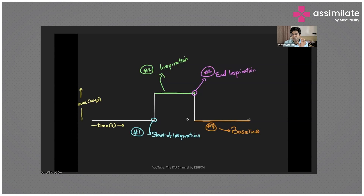The terminology: the thing which triggers the ventilator — which tells the ventilator that you need to start the inspiration — is called your trigger. There are different types of triggers. The thing which tells the ventilator to stop the inspiration so that exhalation can take place is called the cycle. These two terms are important.